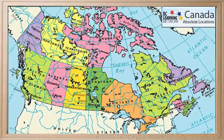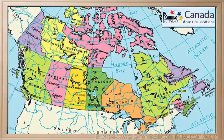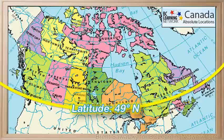So let's switch over to our absolute descriptors now. You may have heard people say that we live north of the 49th, or north of the 49th parallel. Well here's why. See, here's the 49th parallel right here, and you can see that a big part of our border with the US runs along the 49th parallel.